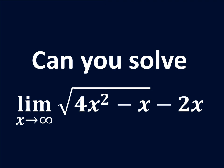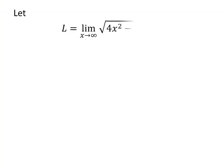In this video, we will learn to find the limit of square root of 4 times square of x minus x, minus 2 times x, as x approaches infinity. Let us assume L is the limit of square root of 4 times square of x minus x, minus 2 times x, as x approaches infinity.